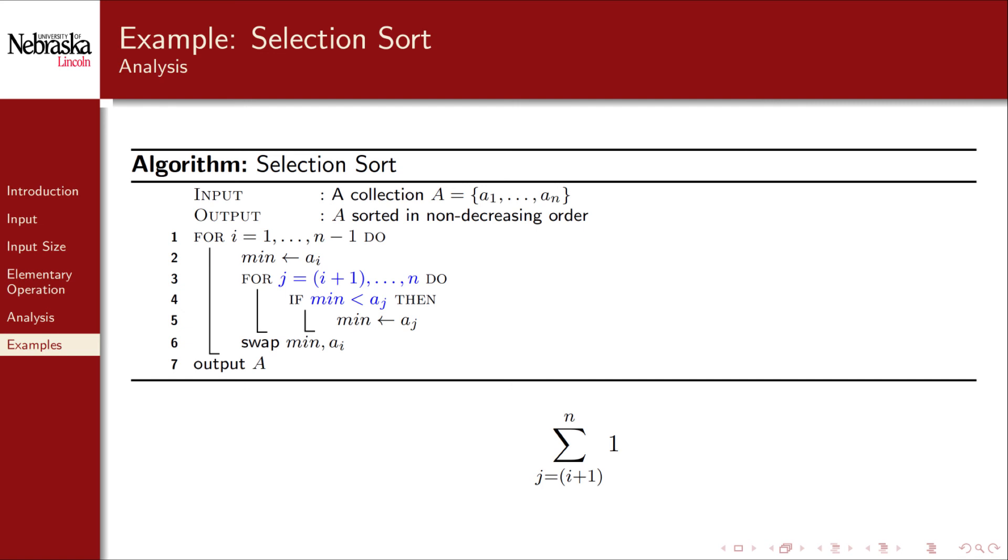The inner loop executes once for each value of our index variable j, running from i plus 1 up to and including n. This gives us our first summation. The block of code from lines 3 through 5 is executed once for every execution of the for loop on line 1. This gives us a nested summation where i runs from 1 up to n minus 1.